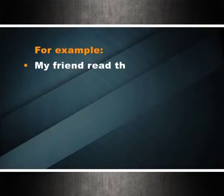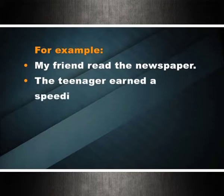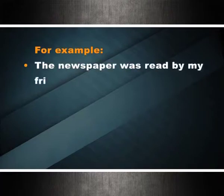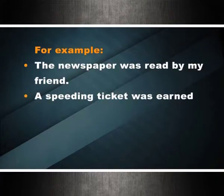A transitive verb is followed by a noun or noun phrase, which is called a direct object because it refers to the object being acted upon. Examples: my friend read the newspaper; the teenager earned a speeding ticket. A way to identify a transitive verb is to invert the sentence, making it passive — for example: the newspaper was read by my friend; a speeding ticket was earned by the teenager.